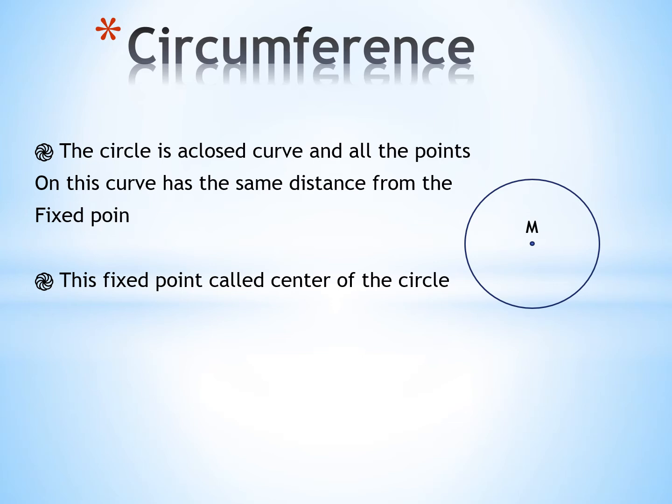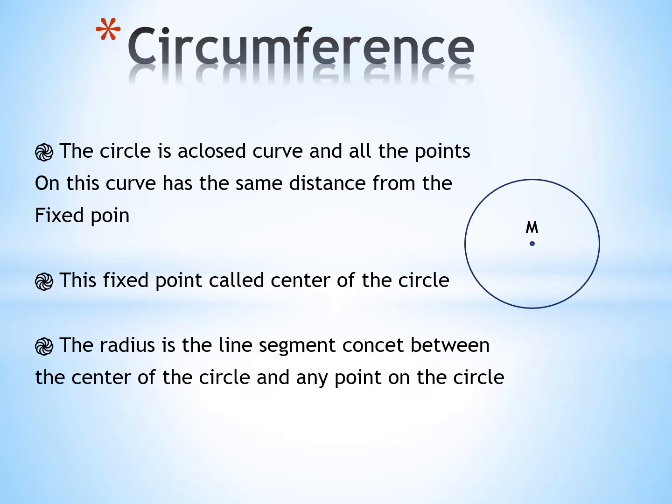So this circle is called circle M. The radius of the circle is a line segment connecting between the center of the circle and any point on the circle, as shown. The radius is denoted by r small.